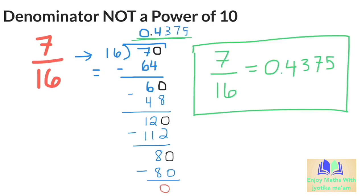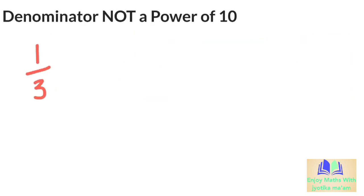As another example, let us try the fraction 1 third. 3 goes into 1 zero times because it is too big. So we add a 0 and then a decimal point. 3 goes into 10, 3 times. 3 times 3 is 9, and our remainder becomes 1.